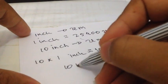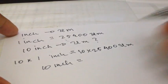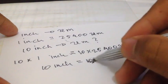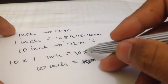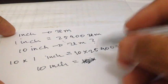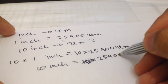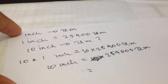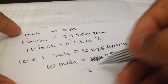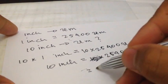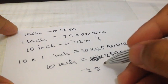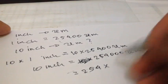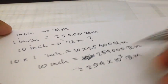So we have 10 inch is equal to what? 10 multiplied by 25,400 — we will have another 0 at the end, alright? So that gives us 254,000 micrometer. Now if we want to make it even cooler, people use the power of 10, so we can write this another way: 254 multiplied by 10 to the power of 3 micrometer. And that's the answer to this question.